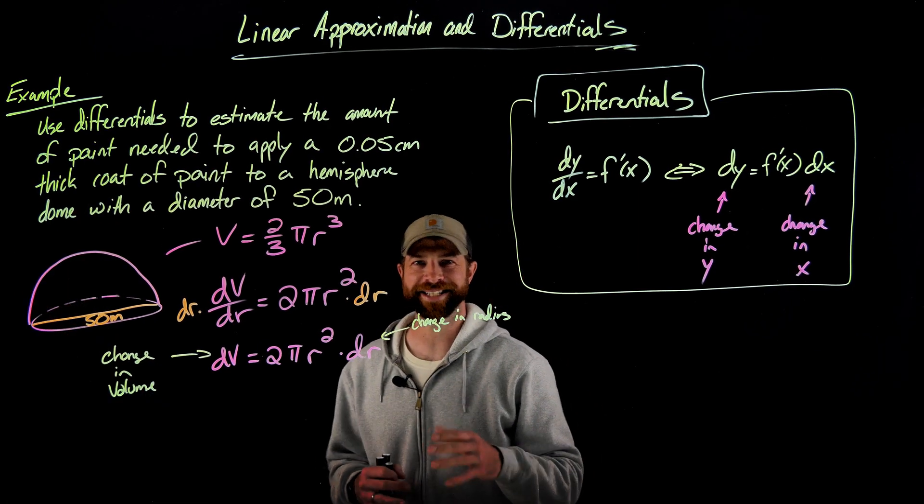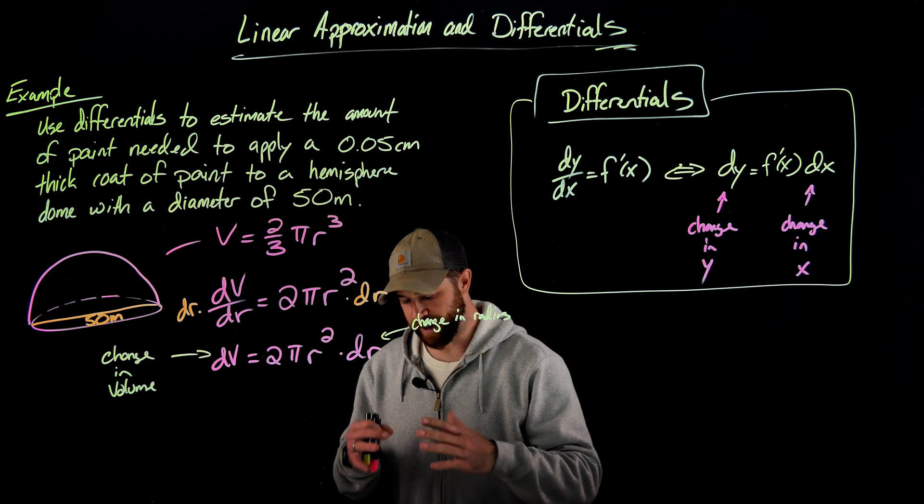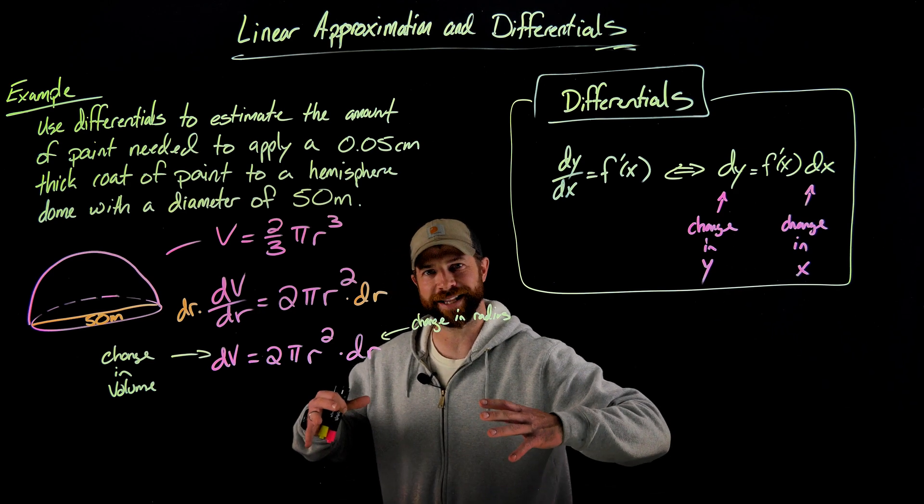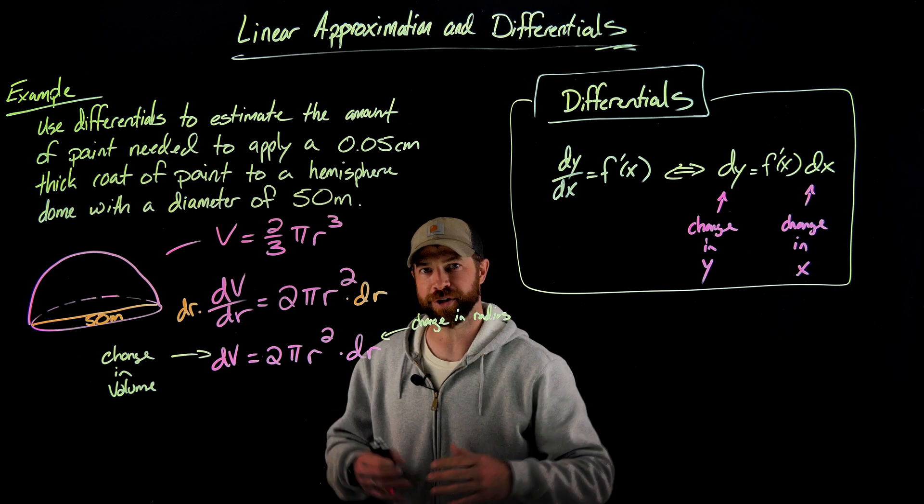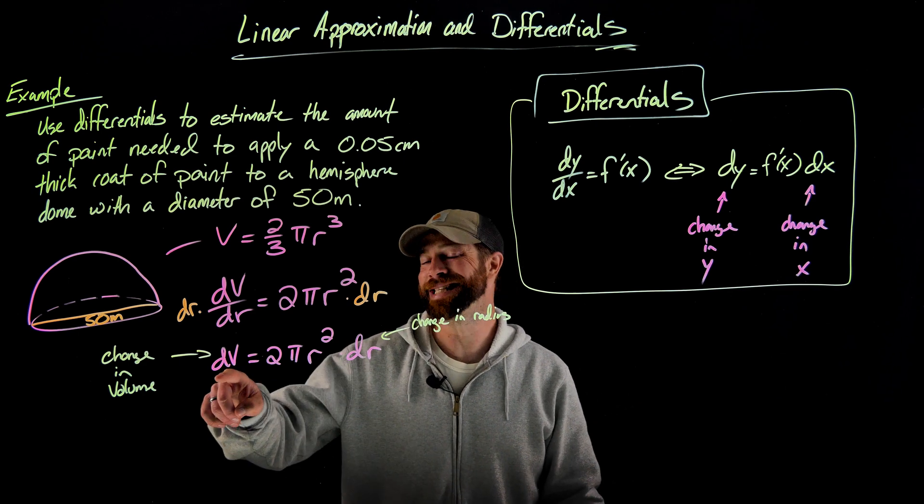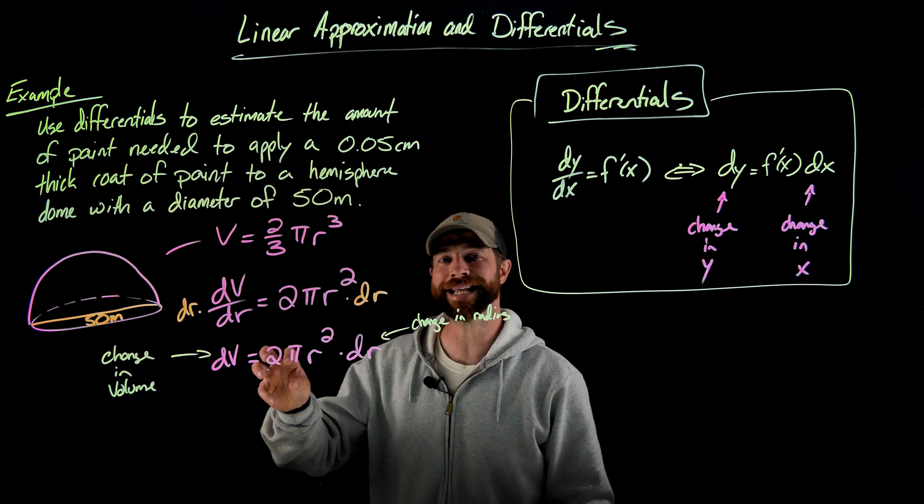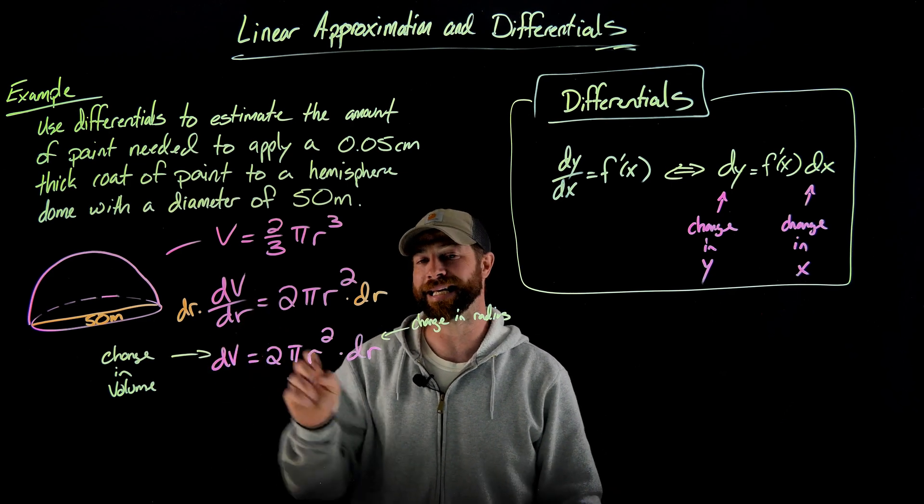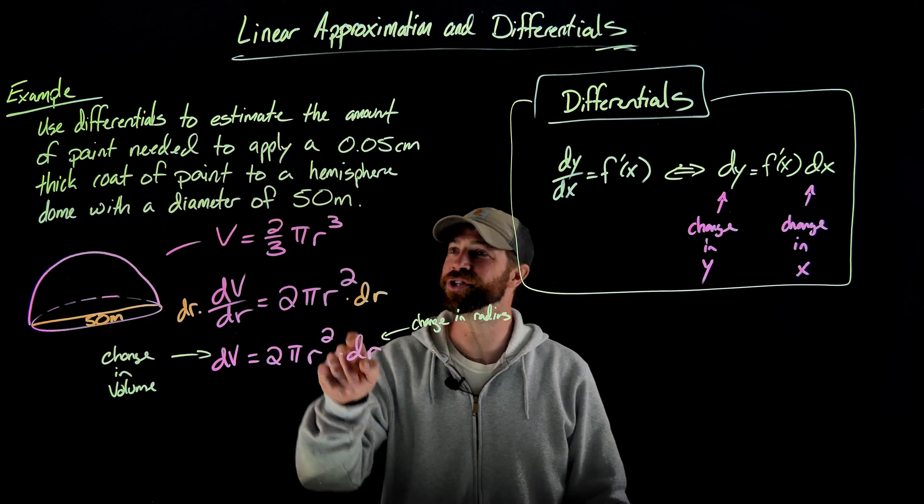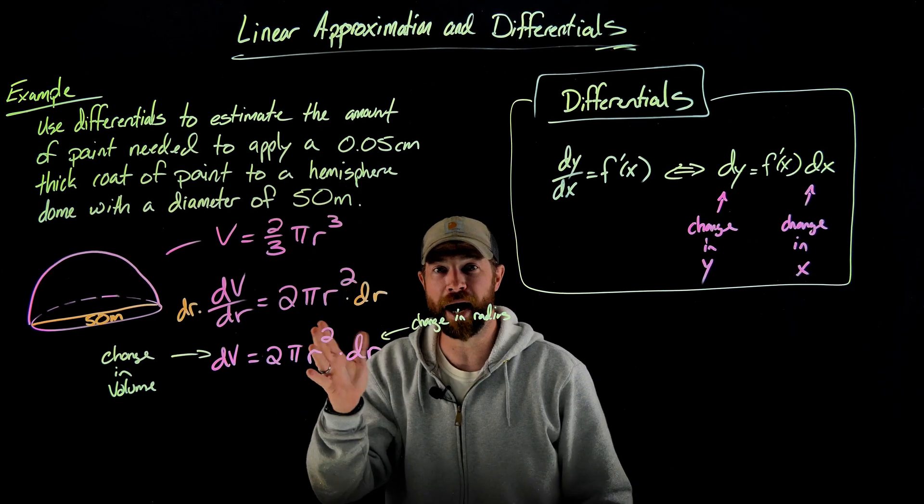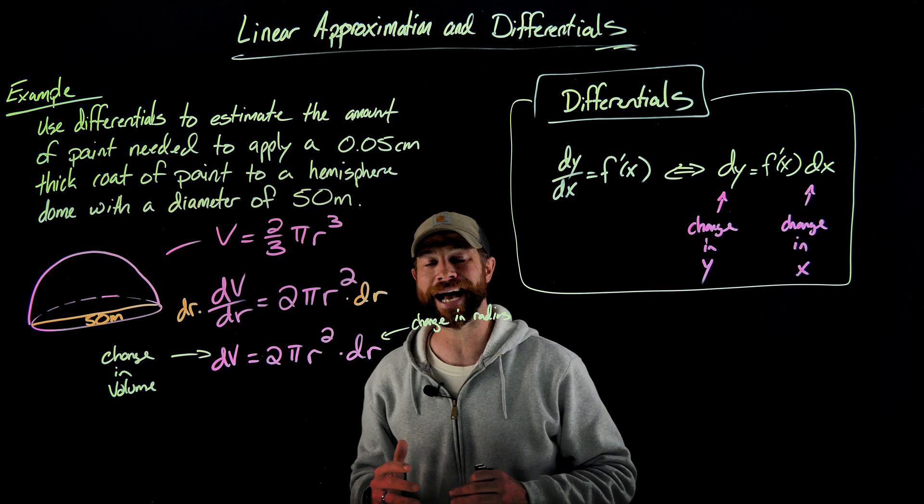So again, the context that I was trying to say before, when we think about adding the paint to the outside of this dome, we're going to consider that a change in the overall volume of the dome. Specifically, this dV right here will represent the amount of paint that we need. This dr or the change in our radius is actually this right here. It's how much we're adding on to the outside of the dome.